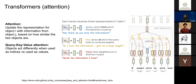Transformers — everyone here has at least heard of them, and many have worked with the architecture. The fundamental idea behind the transformer architecture is attention. To summarize: we want to update the representation for object i with information from object j based on how similar or relevant the two objects are to each other.